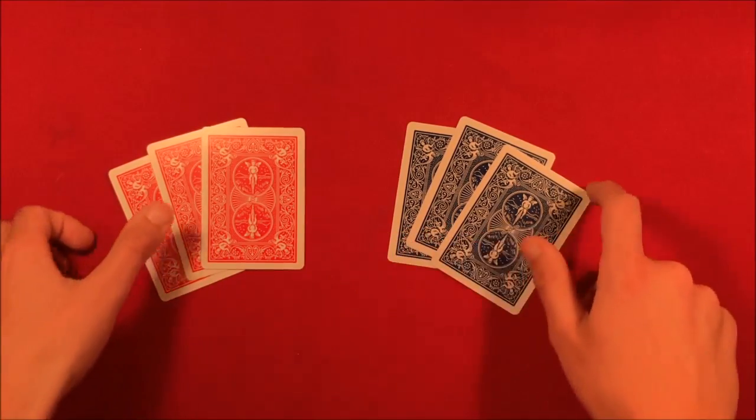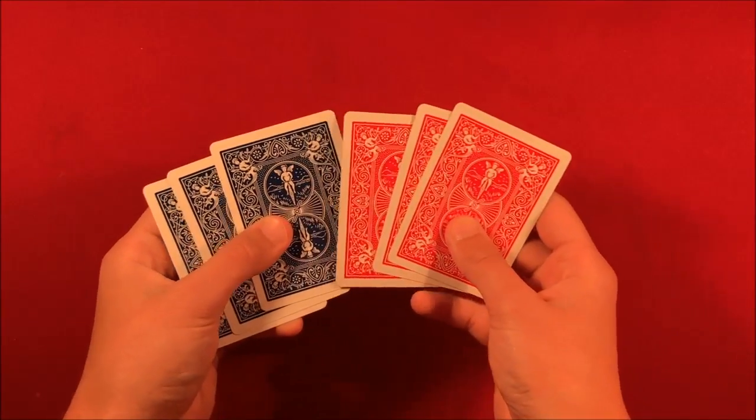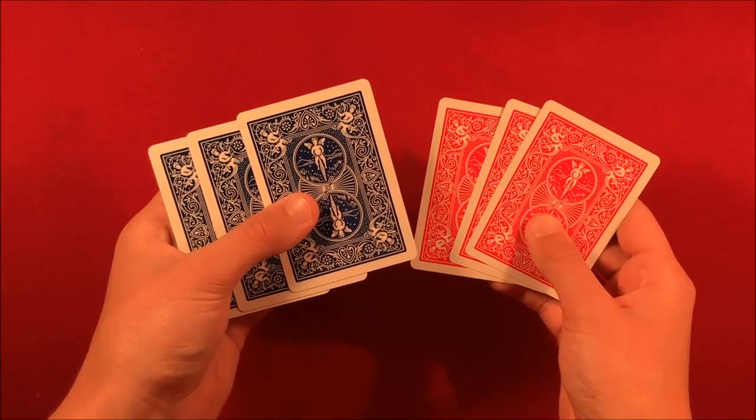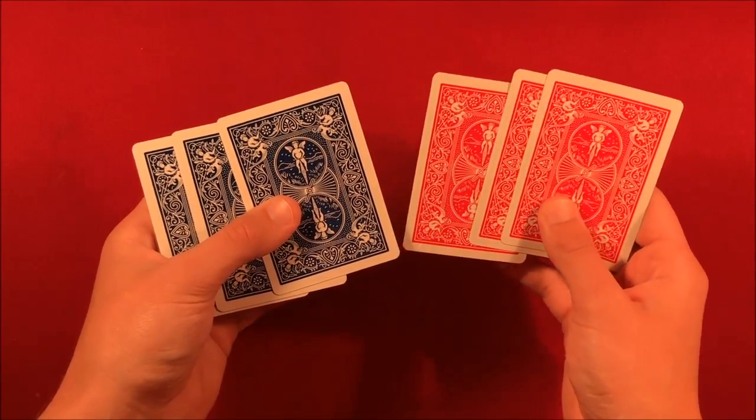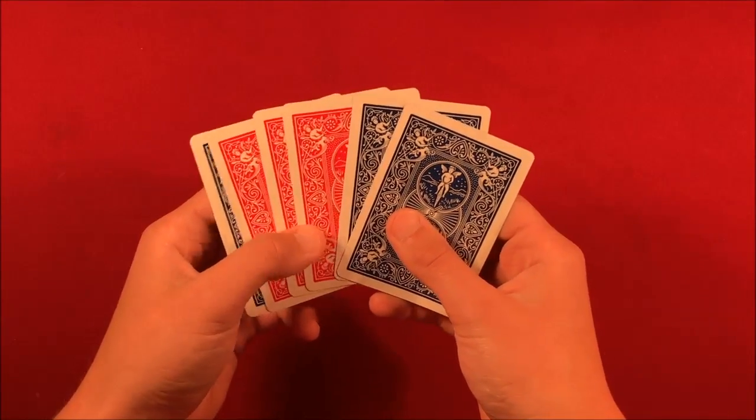just going to be going over the card placement throughout the trick. So here's how it's going to work. You can take three cards of whatever color you want. And let's say we wanted to go from blue to red. So you take the three red cards and you put these second to last. So with the